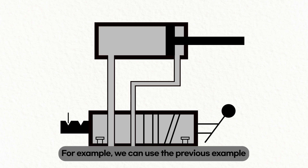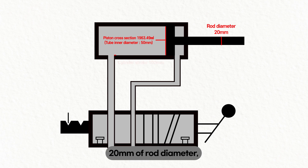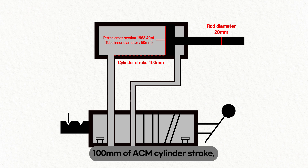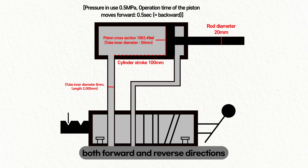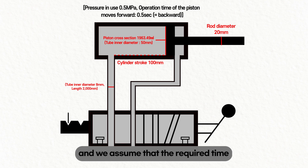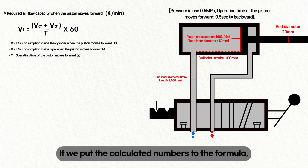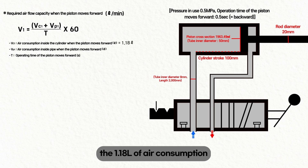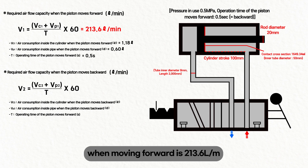Using the previous example — 50 mm bore diameter, 20 mm rod diameter, 100 mm ACM cylinder stroke, 8 mm inside diameter and 2-meter nylon tube installed identically in both directions, pressure of 0.5 megapascals — and assuming the required time for moving forward and backward is 0.5 seconds, the cylinder's required air amount when moving forward is: 1.18 liters in the cylinder, 0.6 liters in the pipe, over 0.5 seconds, giving 213.6 liters per minute.